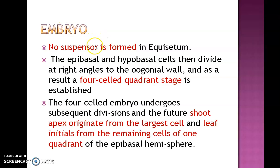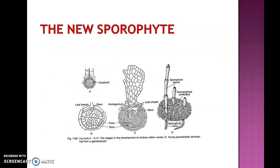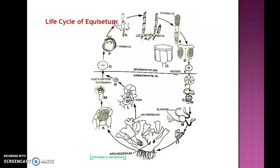In Equisetum, there is no development of a suspensor. The epibasal and hypobasal cells form the four-cell quadrant stage, from which shoot apex, root apex, and leaf initials are developed. Numerous sporophytes can develop on the same prothallus in the case of Equisetum.